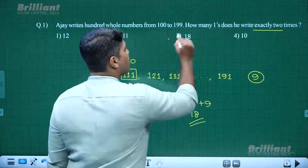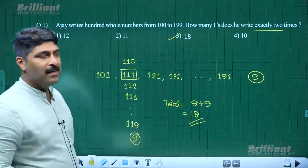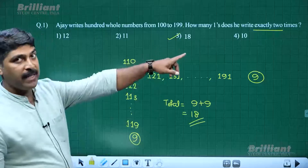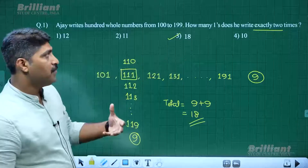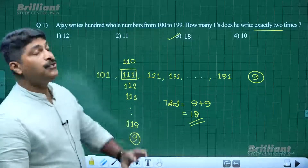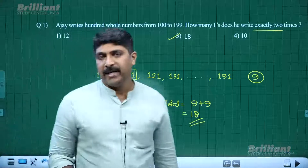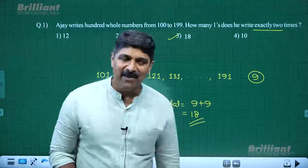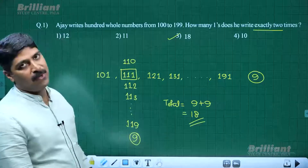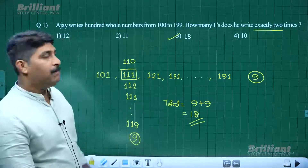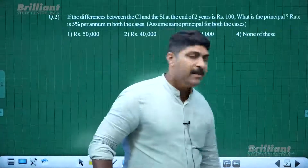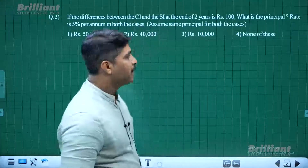The answer is option 3, which is 18. If the question had asked 'at least two times,' we could include 111. But since it says 'exactly two times,' we exclude 111.